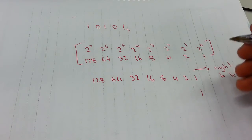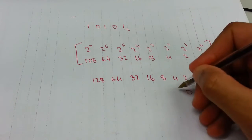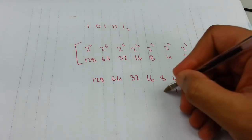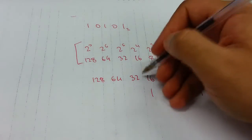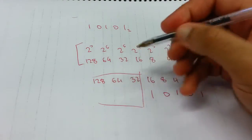I would put 1 here, 0 here, 1, 0, and 1. Get rid of that because we don't need it.